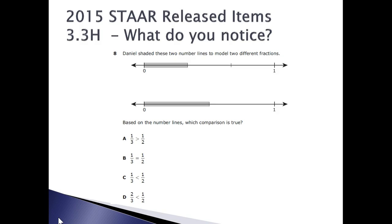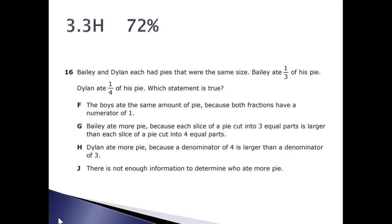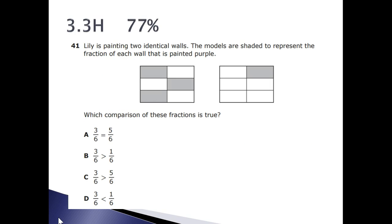We did have a released item in 2015, however this wasn't tested on STAR. Notice we have a number line to demonstrate one-third and one-half, what the comparison is between those two fractions. 3.3H, it was tested, seventy-two percent mastery on this item. Notice this is the verbal form of description. Then it was tested with number forty-one, where we have the pictorial form.